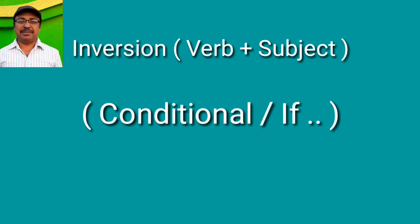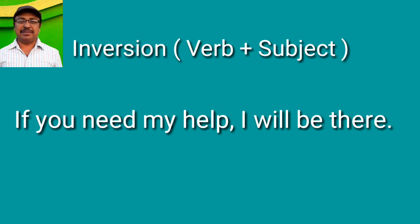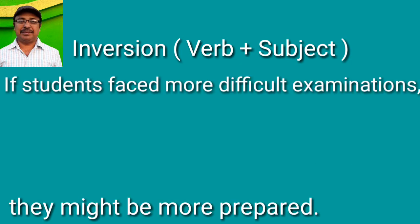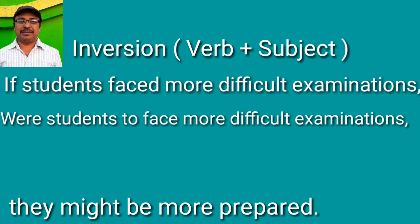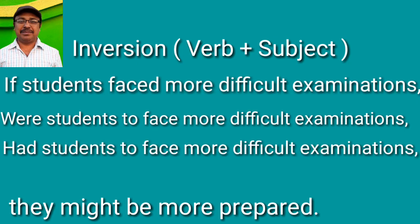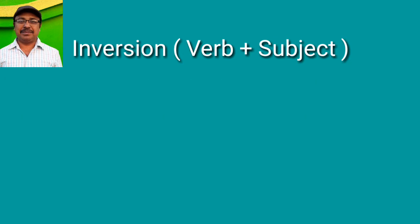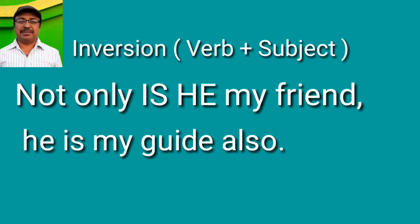In case of conditional sentences with 'if,' we can use inversions. For example, instead of 'If you need my help, I will be there,' I can say: 'Should you need my help, I will be there.' Or instead of 'If students faced more difficult examinations, they might be more prepared,' I can say: 'Were students to face more difficult examinations,' or 'Had students to face more difficult examinations,' or 'Should students to face more difficult examinations, they might be more prepared.' When we put the modal verb or 'were' or 'had' before the subject, we can omit the 'if.'